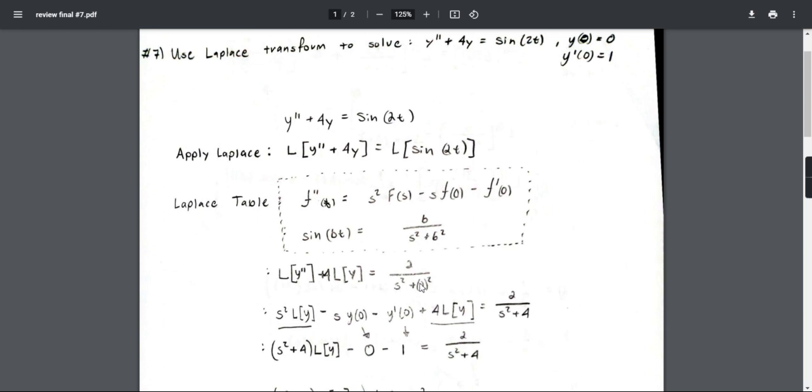Now for double prime, we have to follow these set of equations. s squared L{y} minus s f(0), these are our initial values so we're going to plug these in in a minute, and minus y prime, again we're going to plug that in a minute.